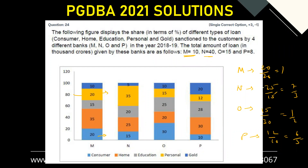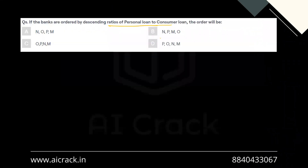So the descending order is: the highest ratio is N (7/3), second highest is P (6/5), third is M (1), and the lowest is O (1/2). The descending order is N, P, M, O — and option B is the correct answer.